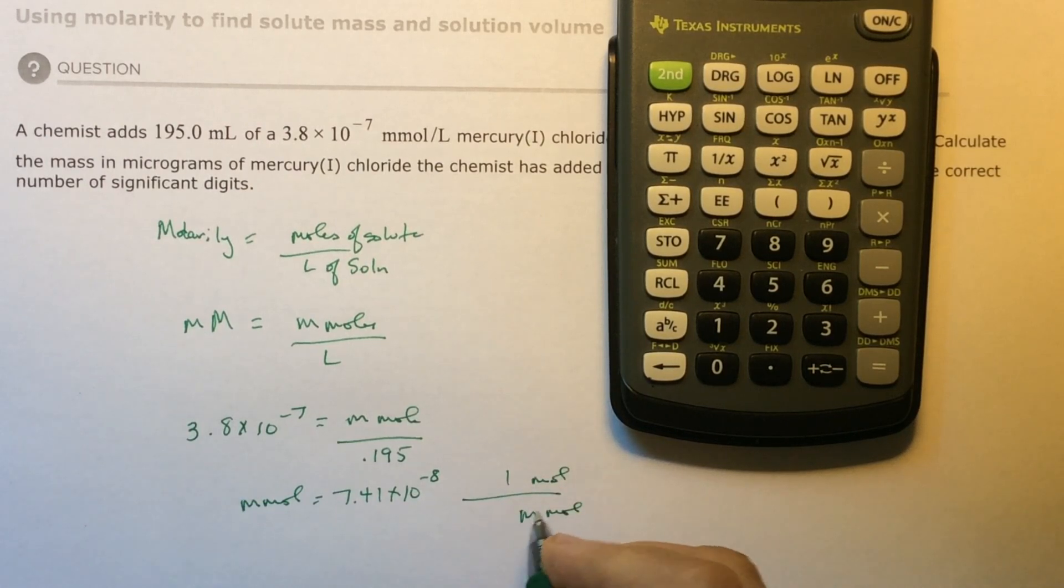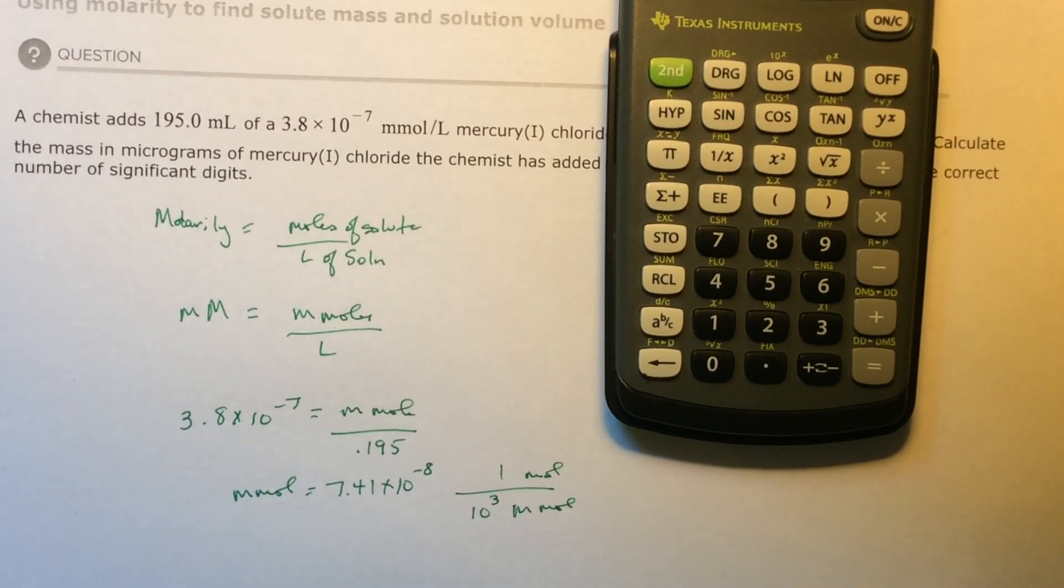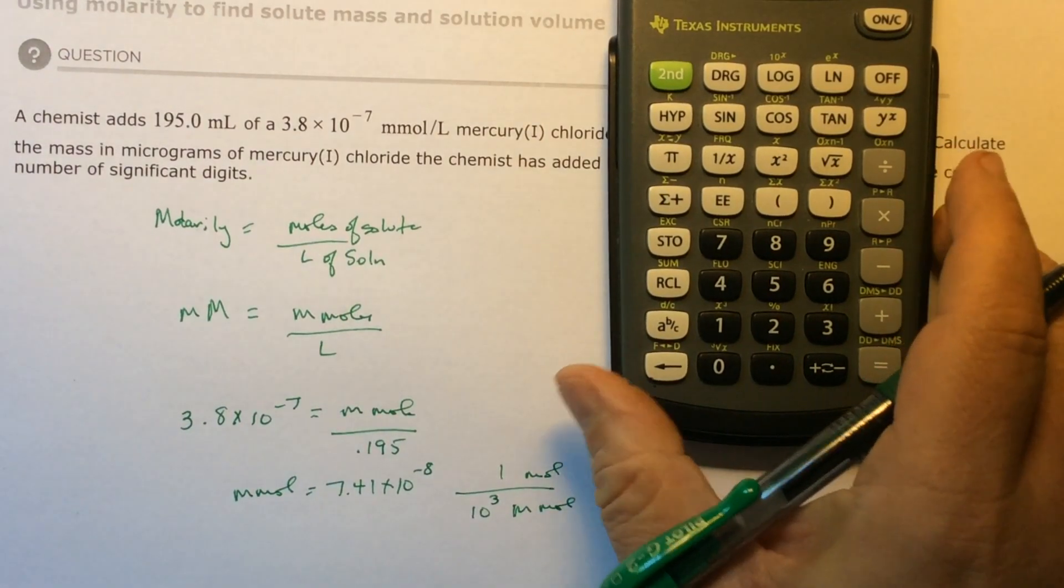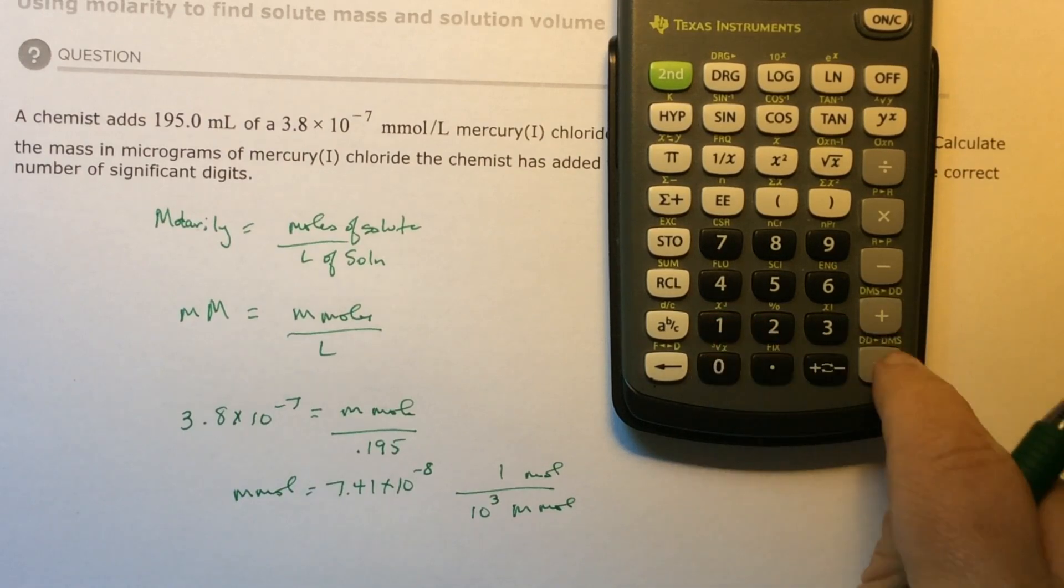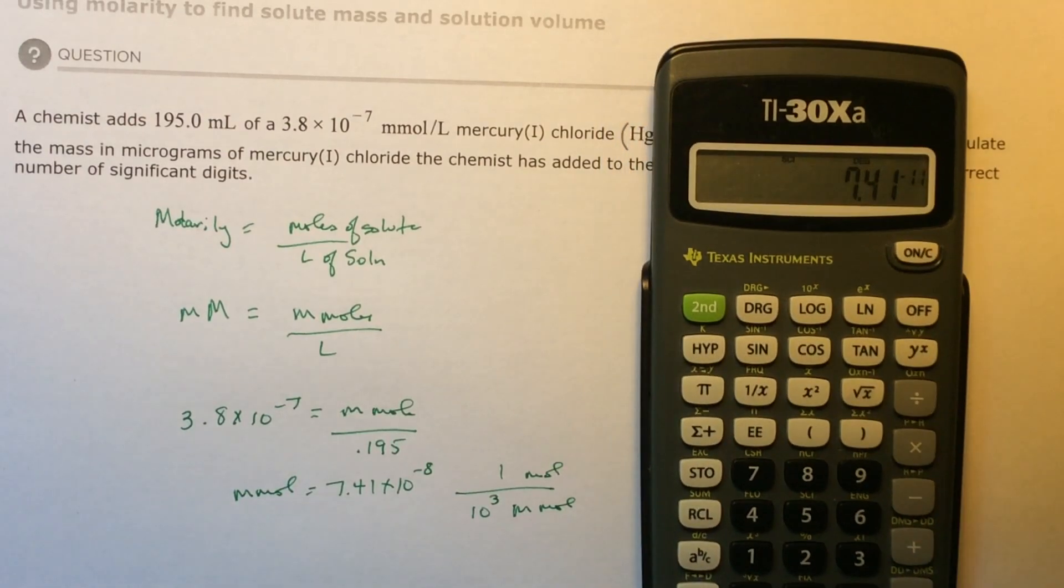In one mole, there is 10 to the third, or 1,000 millimoles. So I'm going to divide by 1,000, which gives me 7.41 times 10 to the negative 11 moles.